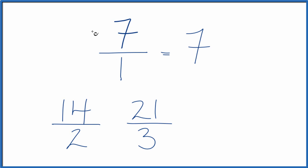How about we choose 5? 5 times 7 is 35, and then 5 times 1 is 5. And these are all equivalent fractions for the whole number 7, or for 7 over 1.